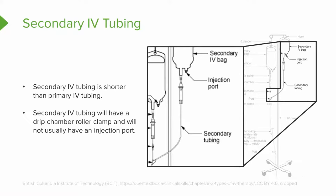Secondary tubing will also have a drip chamber, a roller clamp, and it may also have an injection port. Sometimes as nurses you'll have to mix an IV piggyback — the secondary fluid — so it has a port where you can inject something in. It might also be done in the pharmacy. You've got an injection port in the secondary tubing, sometimes at the top of the bag, where you can inject whatever medication needs to go into that fluid directly into the bag. So secondary tubing is shorter, but will likely have a drip chamber, a roller clamp, and an injection port.